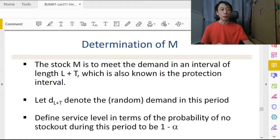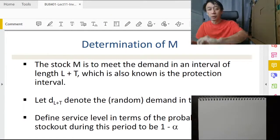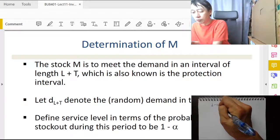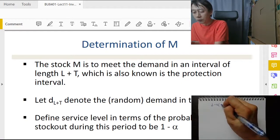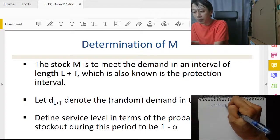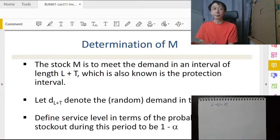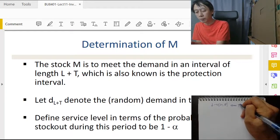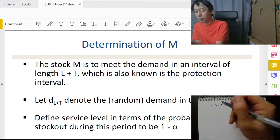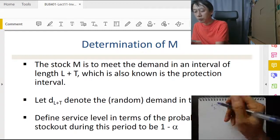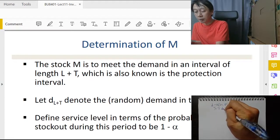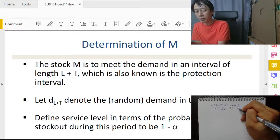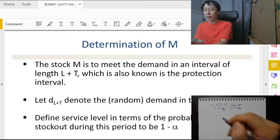Let me switch over to writing mode. Suppose daily demand follows normal distribution with a mean of 20 tires and standard deviation of 8. Assume that is given. We have T equals 7 days and lead time L equals 3 days. Then our protection interval will be 10 days.